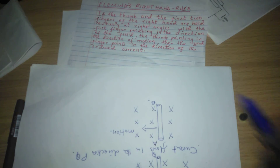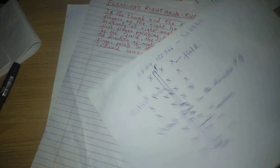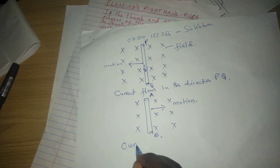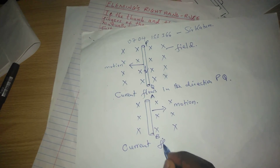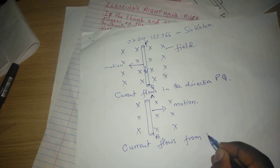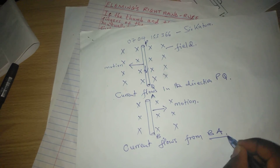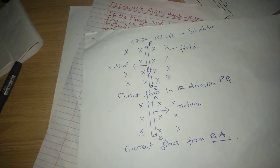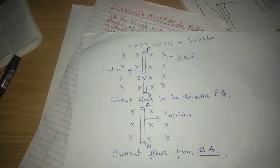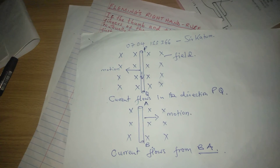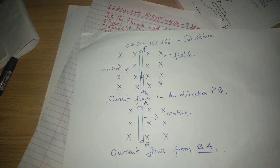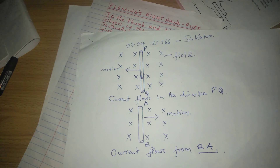According to the second finger, the induced current is flowing from B towards A. So you can turn your paper back and record that current flows from B to A. That is how we apply Fleming's right hand rule in determining the direction of an induced current. Thank you for following — subscribe and share the link.